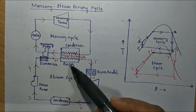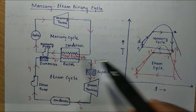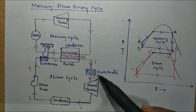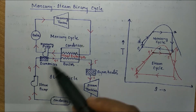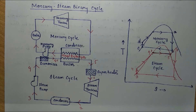Now let's consider the steam cycle. It consists of a boiler, turbine, condenser, and pump. Between the boiler and turbine, we use a superheater, and between the pump and boiler we use an economizer. The economizer is a mechanical device which preheats the liquid water.